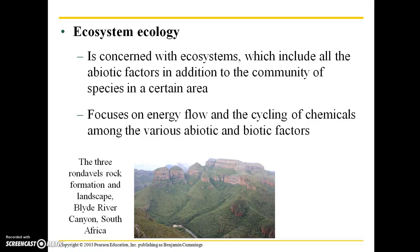Ecosystem ecology is concerned with entire ecosystems, which include all of the abiotic factors in addition to the community of species in a certain area. It focuses on energy flow and the cycling of chemicals among the various abiotic and biotic factors. Ecosystem ecologists might deal with food web questions: what are the primary producers in this system? How do they produce energy that provides the baseline level of a trophic pyramid? Where on the planet is this ecosystem, how much rainfall and solar radiation does it get, and what are the major factors shaping the environment?